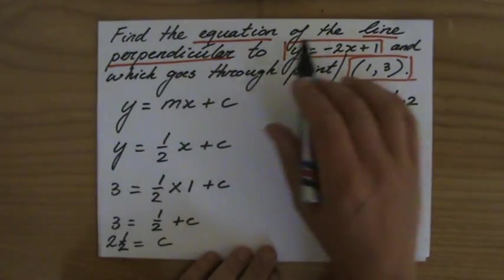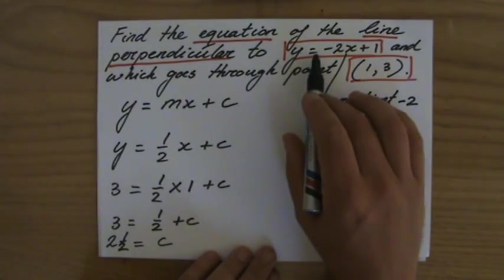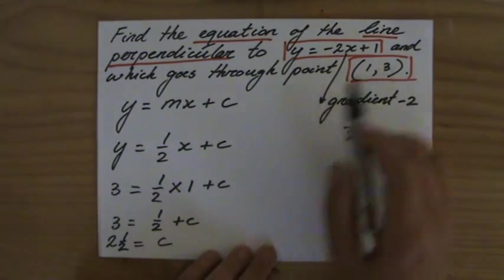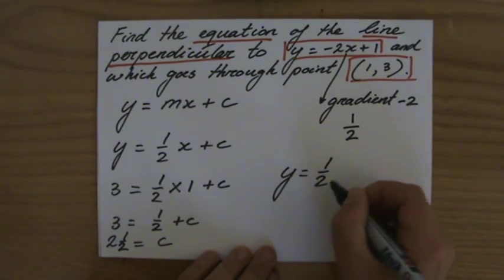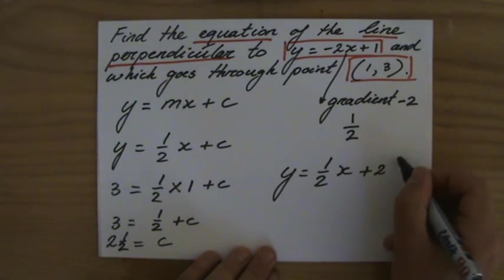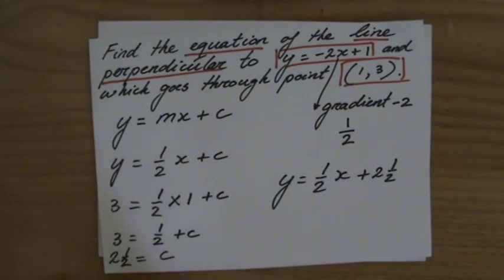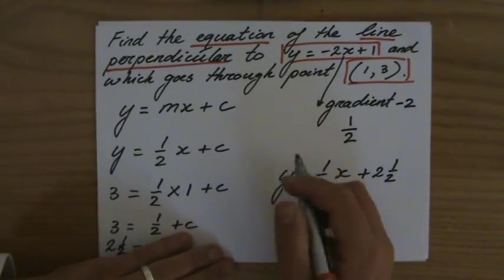So the equation of the line perpendicular to that line and going through point (1, 3) is y equals a half x plus 2 and a half. The y-intercept is 2 and a half. So I have answered the question.